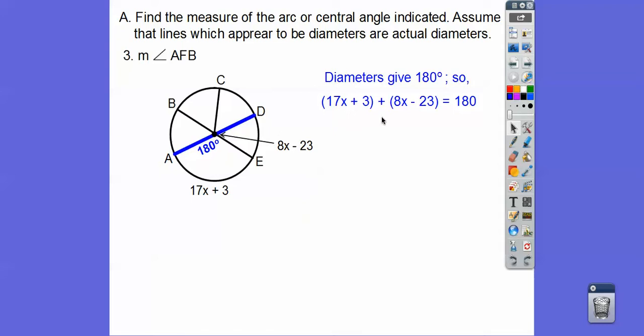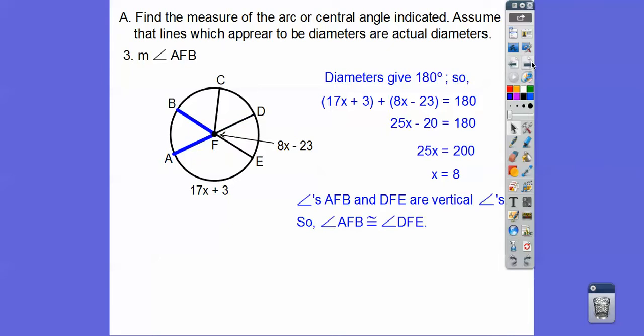So go ahead and combine like terms and we get that and add 20 and then divide by 25. We get X equals 8. So since X equals 8, something disappeared. Oh, that diameter.